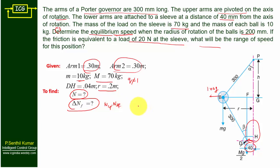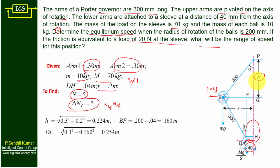We only need to draw one free body diagram — there is no need for two. Since we are finding equilibrium speed, one FBD is enough. Instead of h1, we use just h. The hypotenuse value is 300 mm = 0.3 m. So h equals the square root of 0.3 squared minus 0.2 squared, where 0.2 m is the radius of rotation. This gives h = 0.224 m.